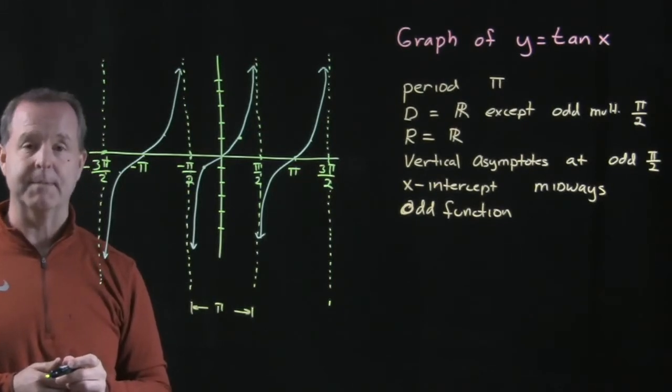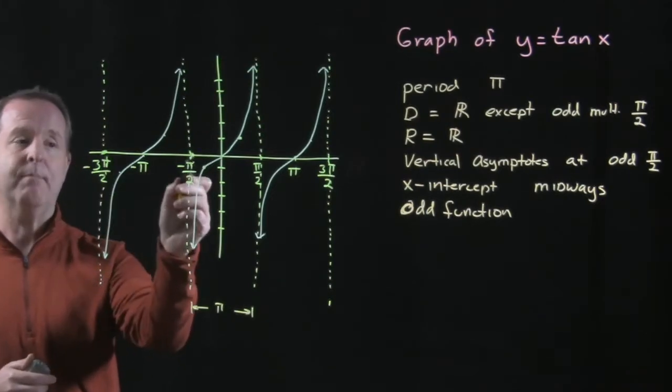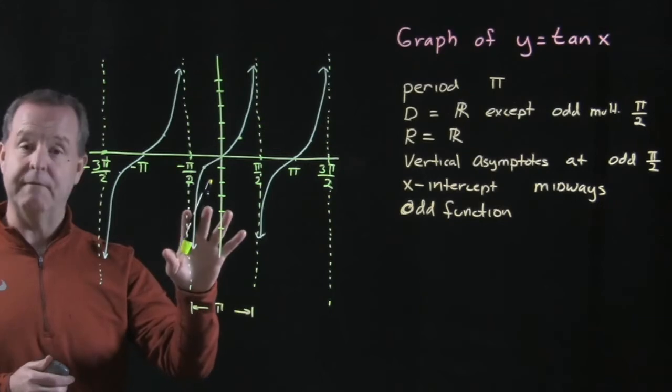The x intercepts, where the graph crosses the x axis, will always be the midway point between the two asymptotes. It's an odd function.